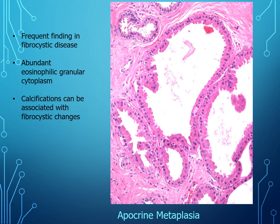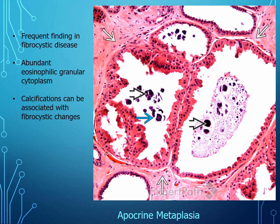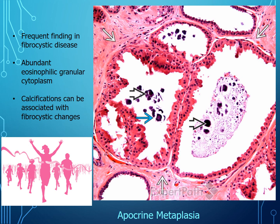Apocrine metaplasia is a personal favorite type of fibrocystic change — it's really pink and pretty. Cells lining these dilated ducts still have myoepithelial cells and luminal cells, but notice the beautiful abundant granular eosinophilic cytoplasm, which gives it its pink look. Sometimes this is associated with microcalcifications. Remember, microcalcifications are normally associated with ductal carcinoma in situ, but they can also occur with benign fibrocystic change.